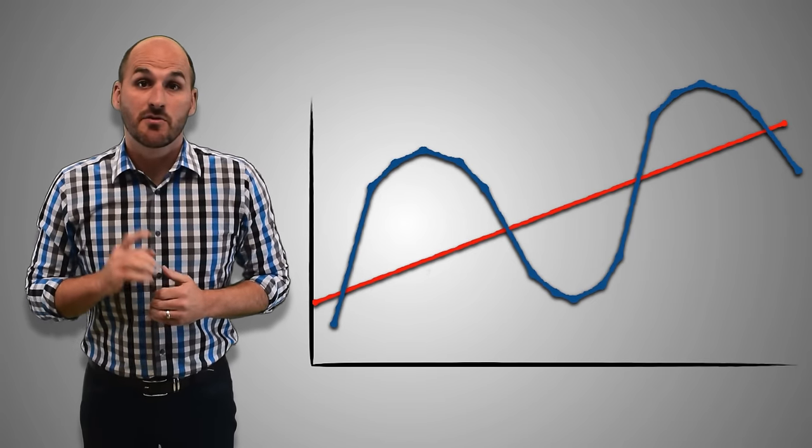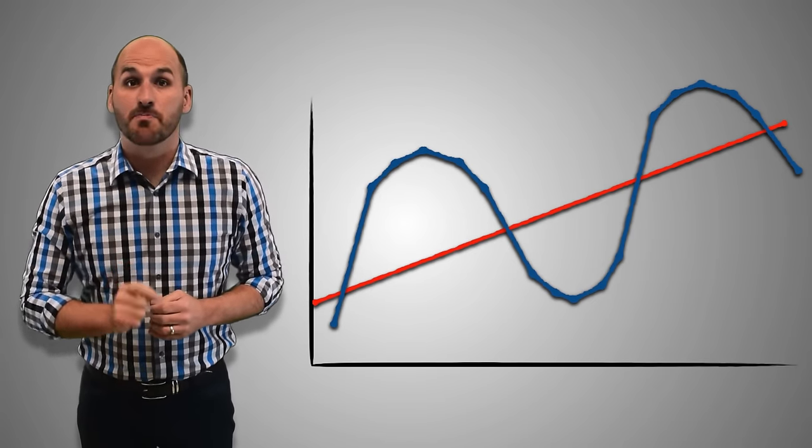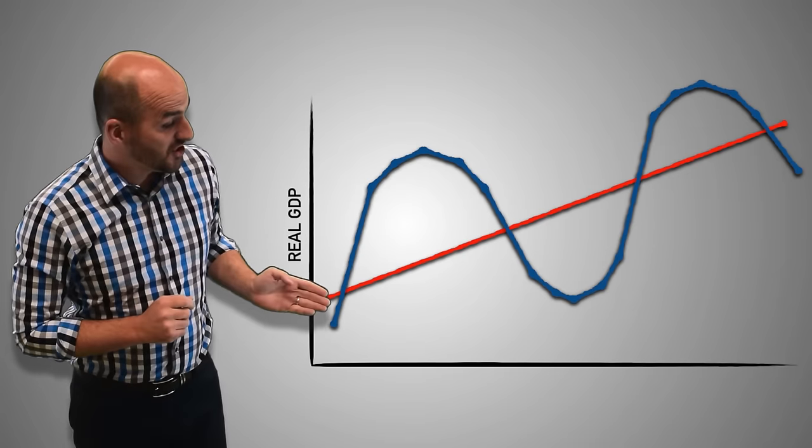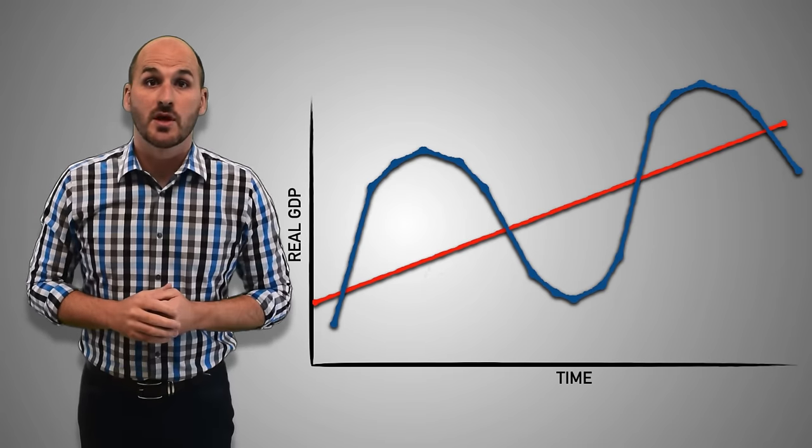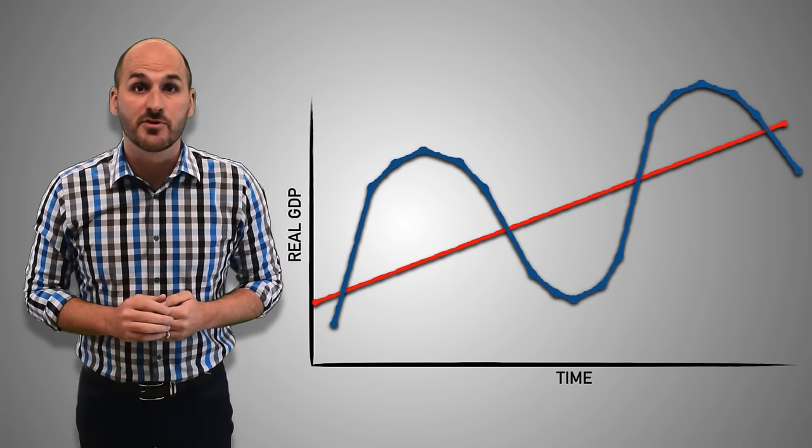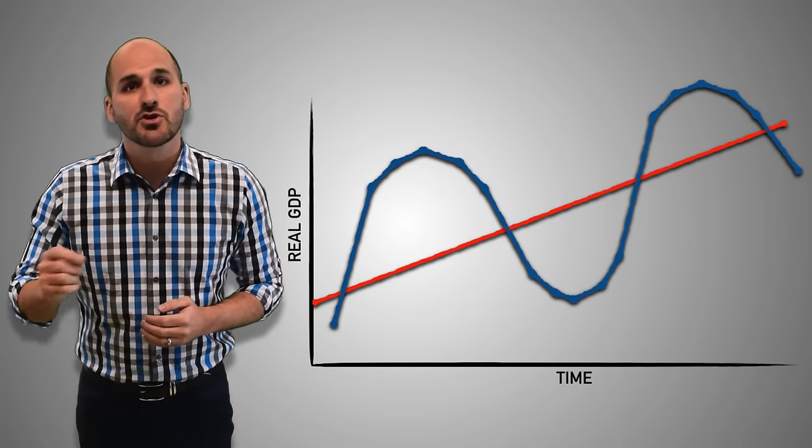Let's start with the basics. First, the business cycle is measured by two components: real GDP over time. Real GDP is the total output produced by the economy, and time is usually measured in years.